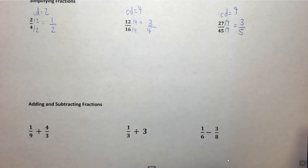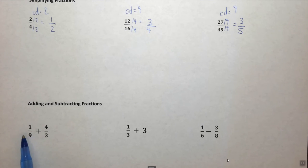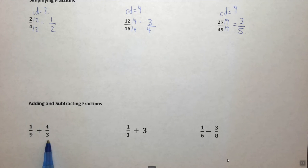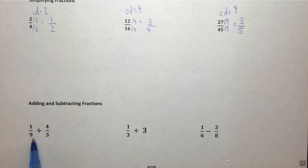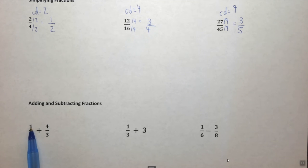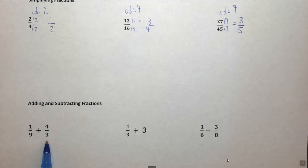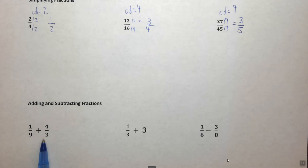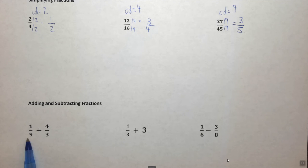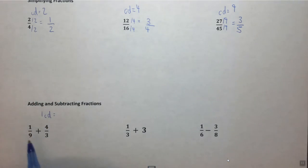Let's look at another example. What if we want to add and subtract fractions? In chemistry we generally multiply and divide fractions, but these rules are still important. If we have 1 ninth and 4 thirds, we can't add these directly because they don't have the same denominator. The top is the numerator, the bottom is the denominator. They have to have the same denominator in order to add them together. So we need the lowest common denominator, which is 9 in this case, because 3 goes directly into 9.